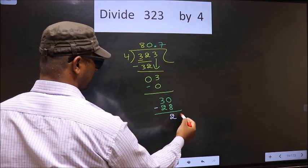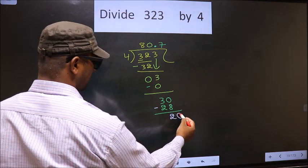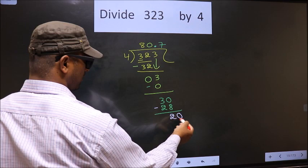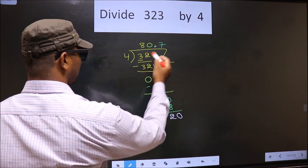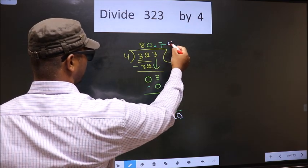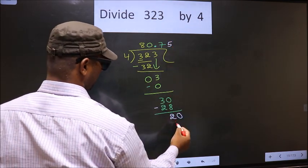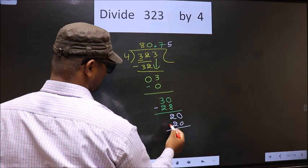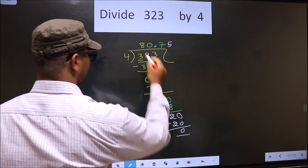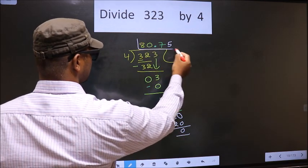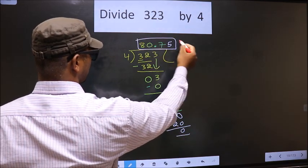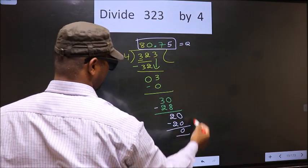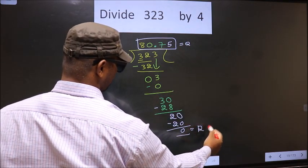We already have the decimal, so we directly take 0. Now we have 20. When do we get 20 in the 4 table? 4 fives are 20. So you subtract and you get 0. This is our quotient and this is our remainder.